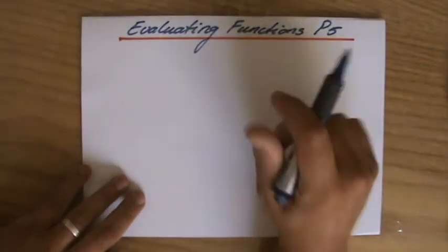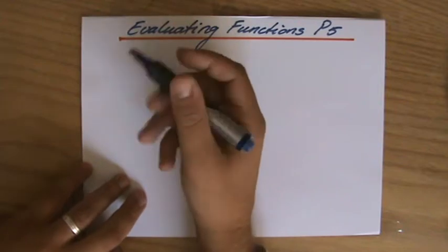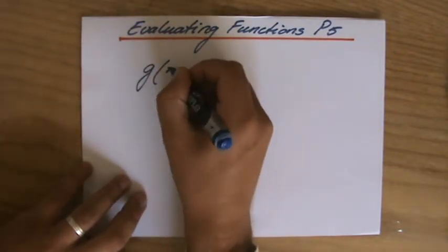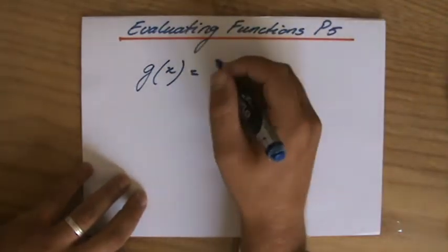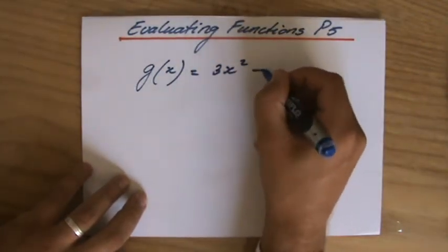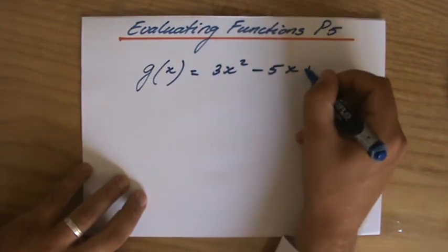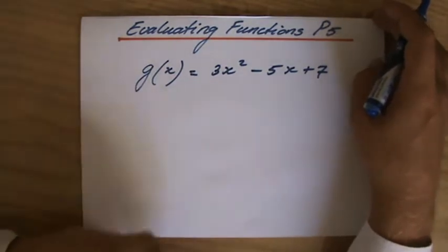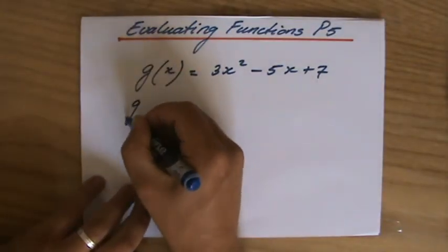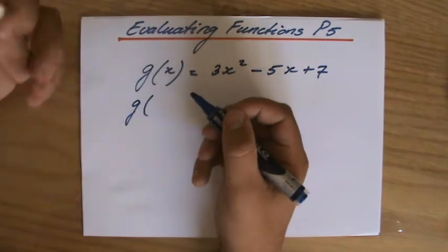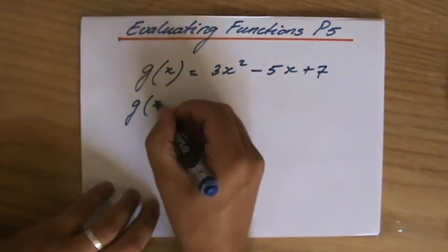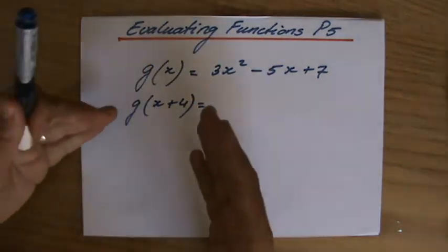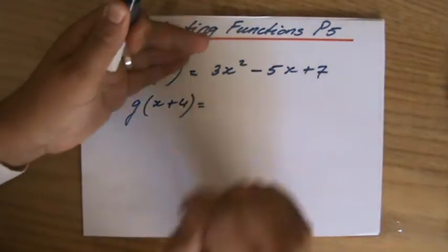This is the last part of evaluating functions, so it's good that you're here. Now let's say we have the function g, where x is the variable, and it is 3x squared minus 5x plus 7. Now they want me to evaluate it, not for a particular value, not for 5 or 6, but for x plus 4. So I have to substitute x plus 4 in my function for x.